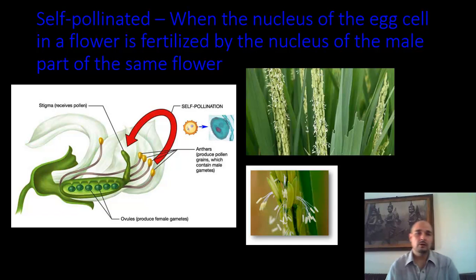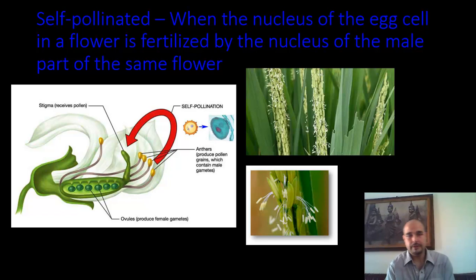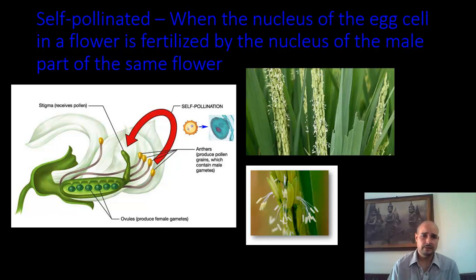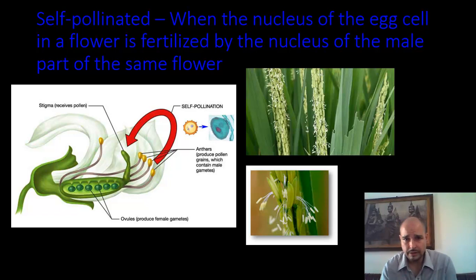We're going to talk about what most plants do through pollination. Most plants are self-pollinated — this is when the nucleus of the egg cell and the nucleus of the male part of the flower, the pollen grain, come together on the same flower. The plant has pollinated itself. The pictures shown are of rice, which is an example of this.